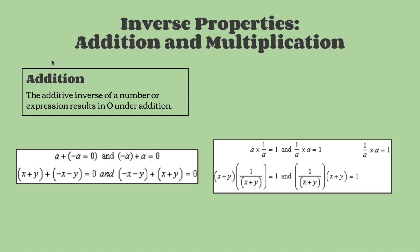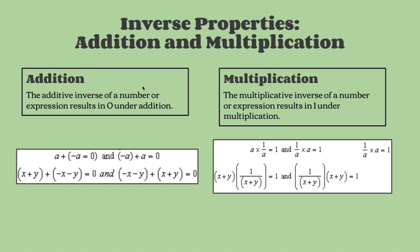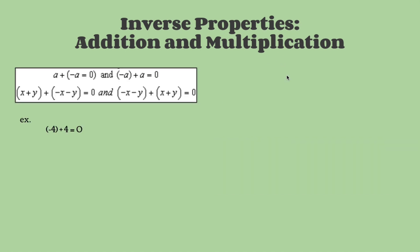The next properties are the inverse properties of addition and multiplication. The addition property states that the additive inverse of a number or expression results in 0 under addition. The multiplication one states that the multiplicative inverse of a number or expression results in 1 under multiplication. This basically means that the inverse, or the opposite of a number, would equal 0 for addition and 1 for multiplication.